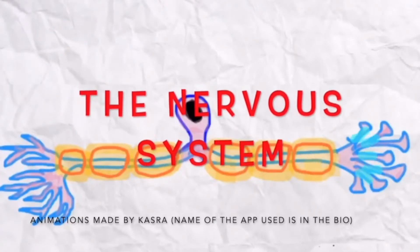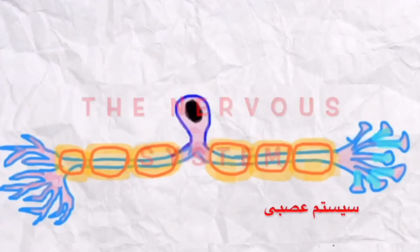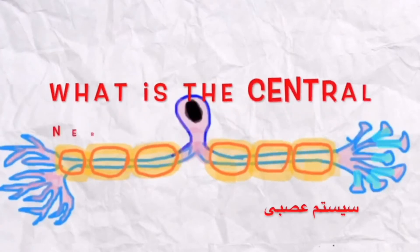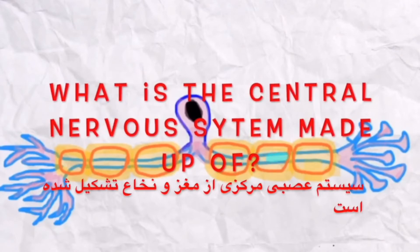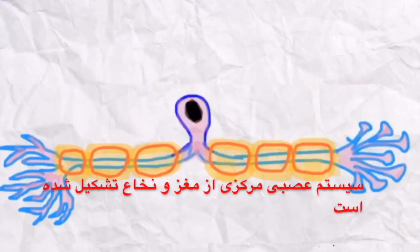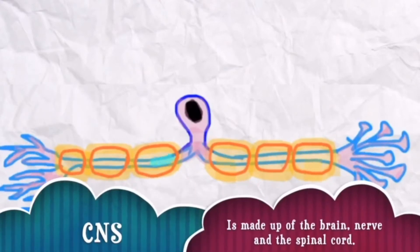The nervous system. What is the central nervous system made up of? Well, the central nervous system consists of the brain, nerves, and the spinal cord.